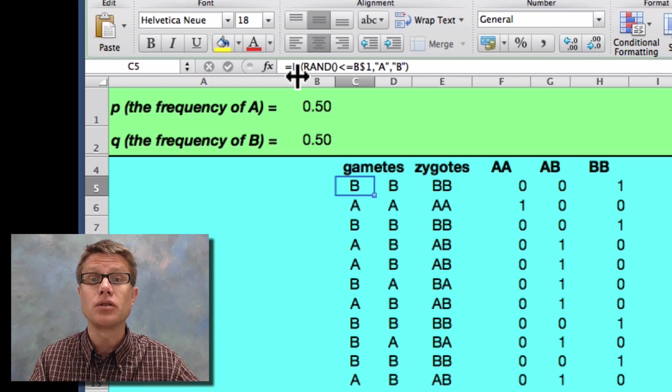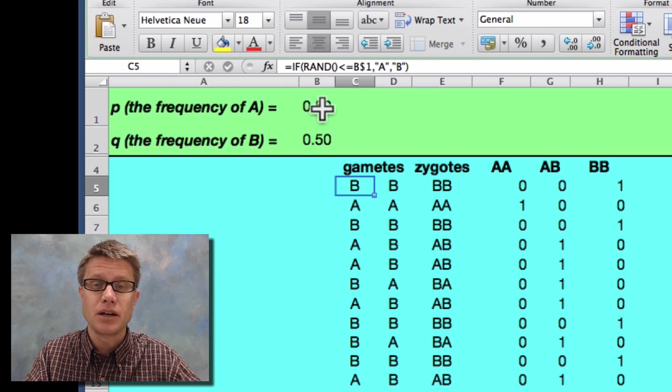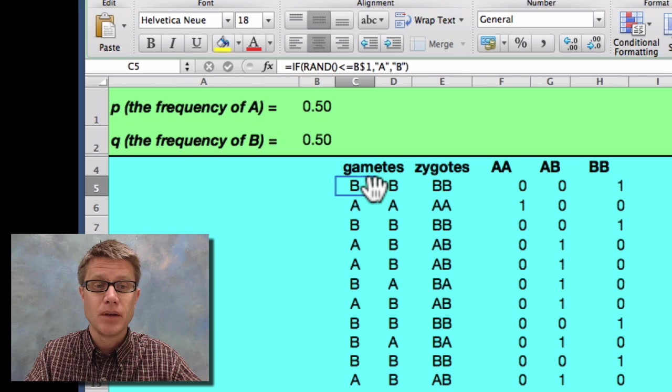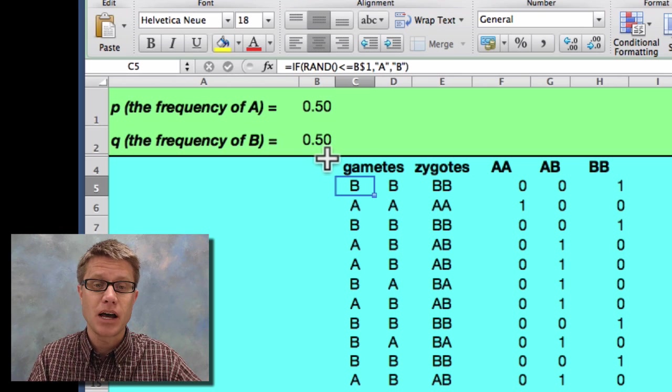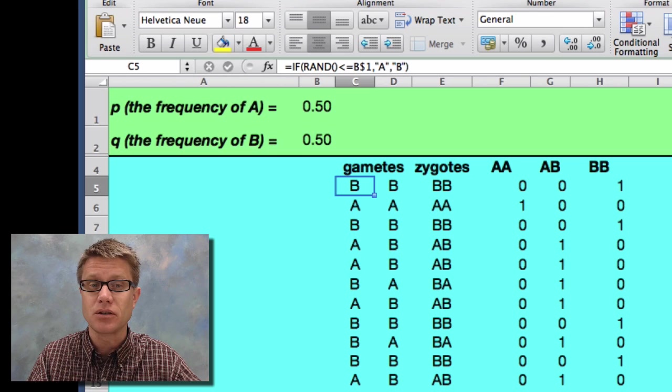If it's less than what's in here, this 0.5, then it's going to put an A in the box. But if it's greater than that, it's going to put a B. Since these values are 50-50, it's going to be about half on each side. Now why are we seeing changes? This is genetic drift. We have a small sample size, so you're going to see change.